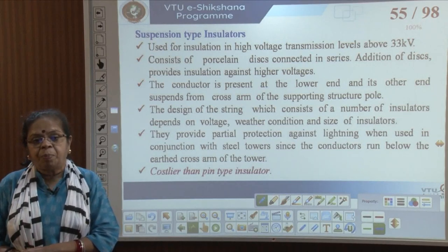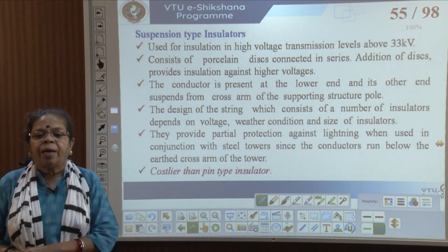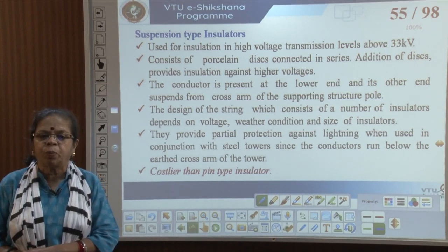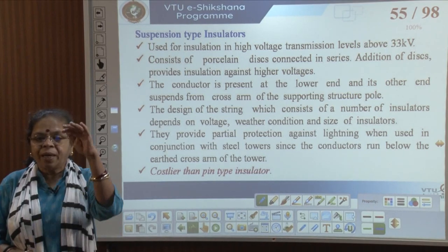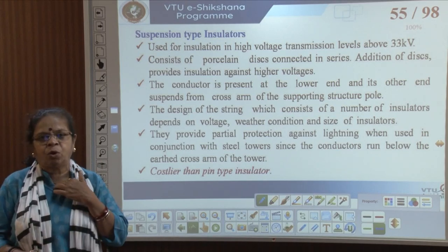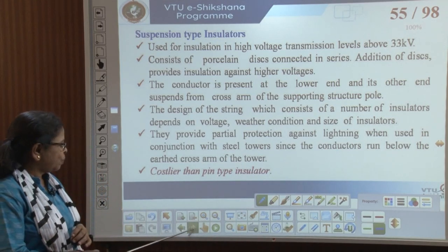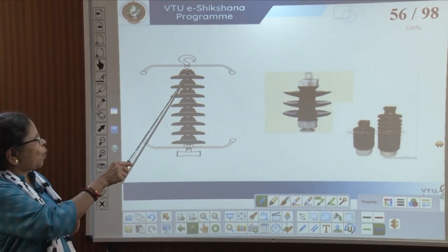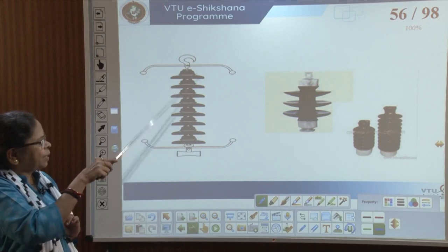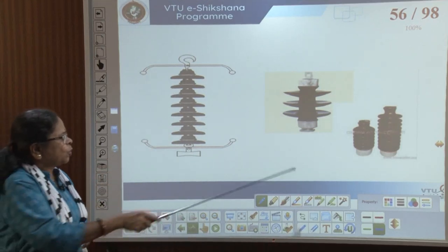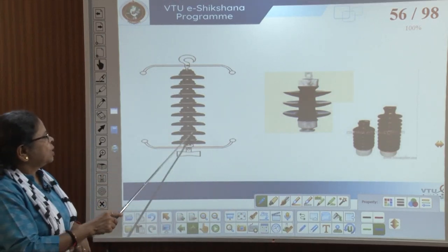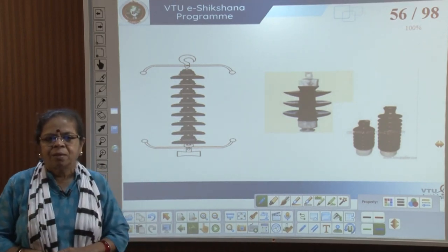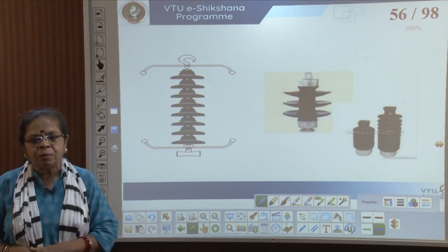Suspension insulators are costlier than pin type insulators and do provide partial protection against lightning when used with steel towers, since the conductors run below the cross arm of the tower. For example, three discs or around seven discs can be used — as you add discs the withstand voltage increases.